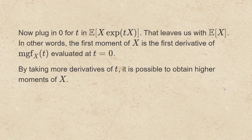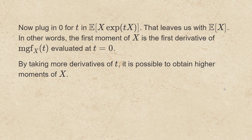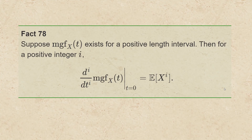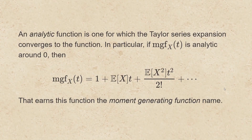By taking more derivatives of t, it is possible to obtain higher moments of x. Swapping derivatives and means is not always valid, but it turns out to be valid for a moment generating function that is finite for a positive length interval that contains t equals 0. In general, if the moment generating function of x at t exists for a positive length interval, then for a positive integer i, the i-th derivative of the moment generating function with respect to t evaluated at t equals 0 is the mean of x raised to the i-th power. An analytic function is one for which the Taylor series expansion converges to the function. In particular, if the moment generating function is analytic around 0, then it equals 1 plus the first moment of x times t, plus the second moment times t squared over 2 factorial, and so on. This earns this function the moment generating function name.